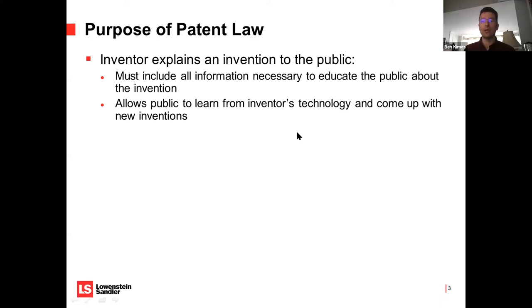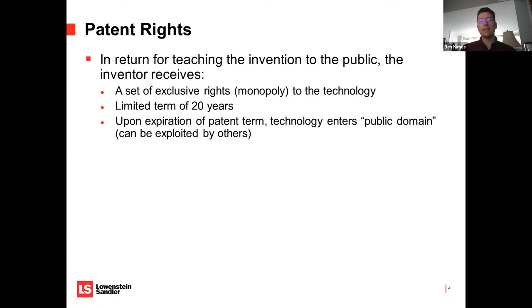A patent gives you exclusive rights to the technology for a term of 20 years from when you file the application. In exchange for teaching the public how to practice that invention, you get to be the only one to practice it for 20 years. This is in contrast to trade secrets — for a trade secret, you don't teach anyone how to practice the invention, so it never expires, but you don't get the right to exclude others from practicing it.